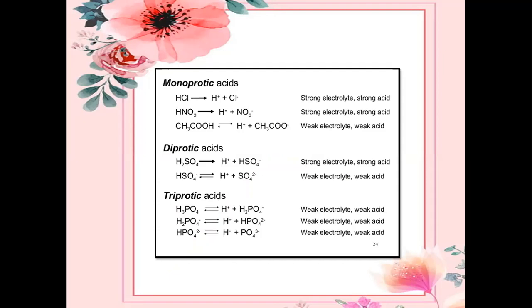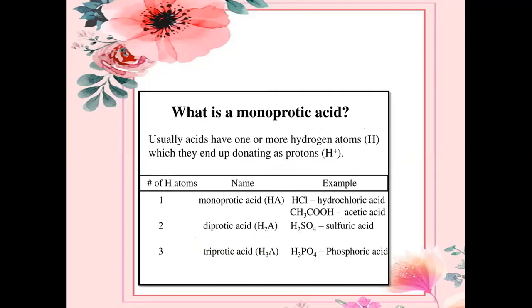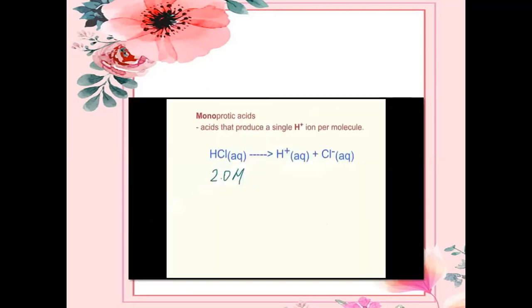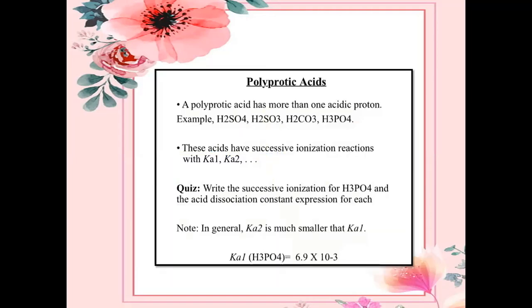What is the difference between monoprotic acid, diprotic acid, and triprotic acid? An acid has one or more hydrogen atoms which it donates as protons. When an acid gives one hydrogen ion, it is called a monoprotic acid — just like HCl and acetic acid. When an acid gives two protons, it is called a diprotic acid. When it gives three protons, it is called a triprotic acid. A monoprotic acid produces a single hydrogen ion per molecule. A polyprotic acid has more than one acidic proton — 'poly' means many, more than one.